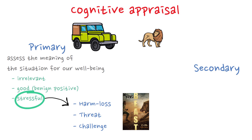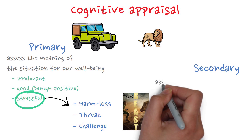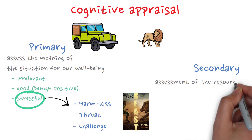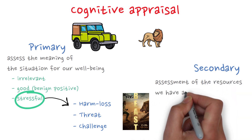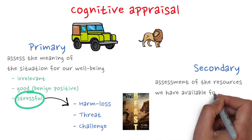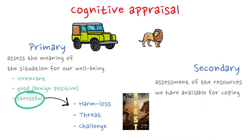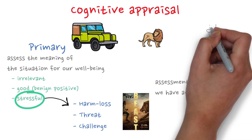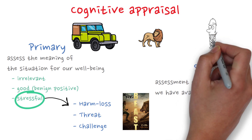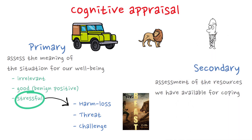After the primary appraisal of the situation, secondary appraisal takes place. Secondary appraisal refers to our assessment of the resources we have available for coping. In our situation, we could, for example, realize we can contact the tour guide who is just a few minutes away with a tranquilizer gun — that could help us cope with the situation.